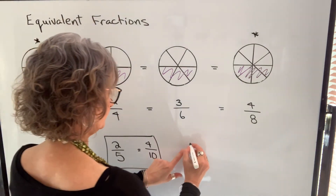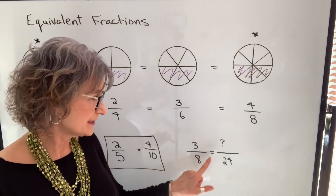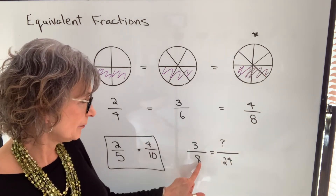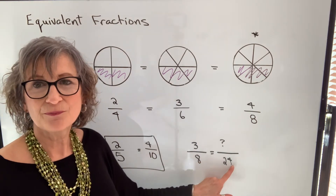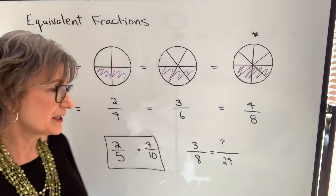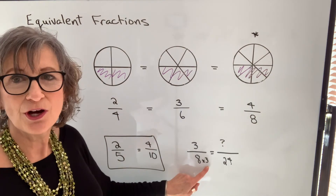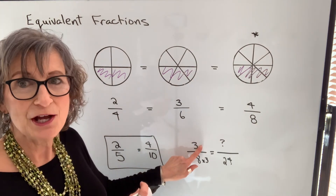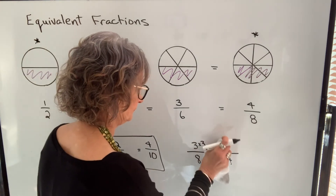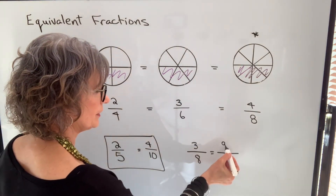Let's do another example. You're given a fraction of three-eighths, and you're asked to find the equivalent fraction, but now the denominator is 24. The way that you do that is you look to see how many times eight goes into 24 — what do you have to multiply eight by to get 24? Well, eight goes into 24 three times. So if we take eight and multiply by three, we get 24. If we multiply the denominator by a number, we have to multiply the numerator by that same number. So we have to multiply three by three. Three times three is nine. Therefore, three-eighths is equivalent to nine twenty-fourths.